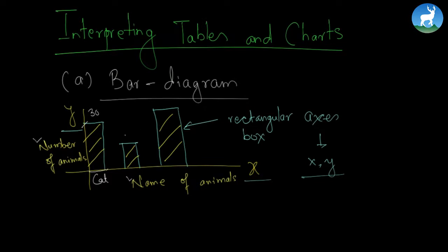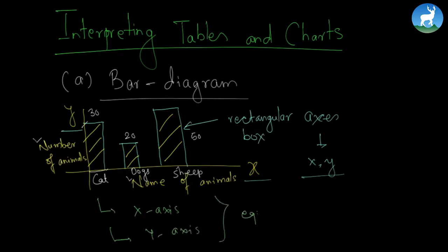So let's assume if the number of animals is 30 and the animal is a cat, we can simply draw this bar diagram by plotting 30 on the y-axis and elongating it along the x-axis to represent a cat. For example, there are 20 dogs, so this represents 20 dogs. And let's say there are 50 pigs.